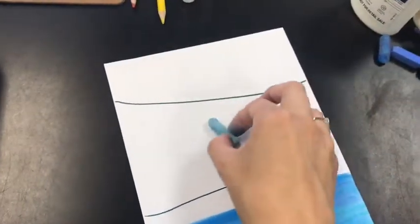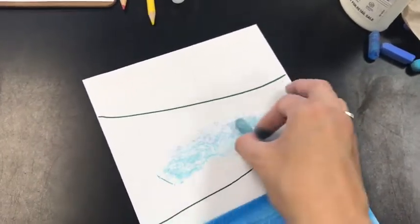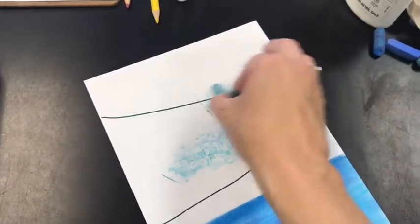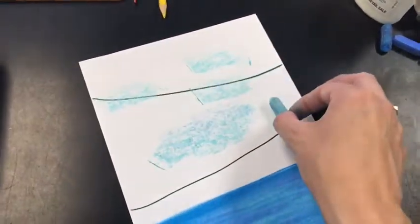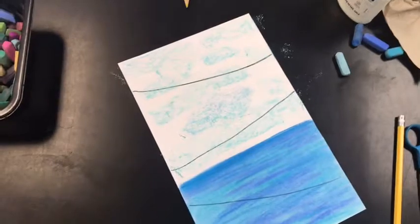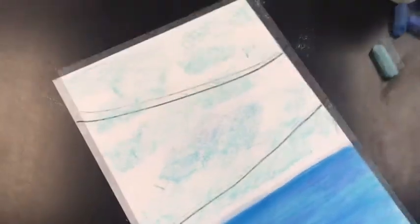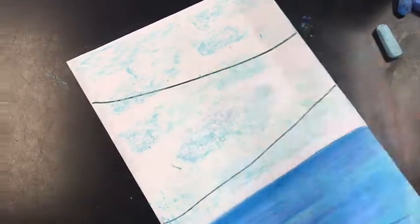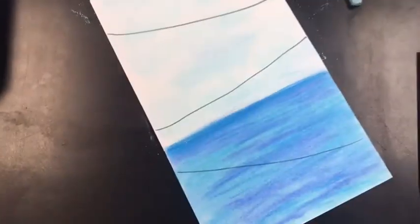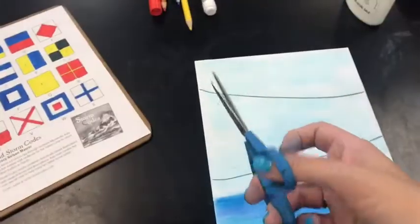You will only use your lightest blue pastel for the sky and you'll turn it on its side and you'll go back and forth across the paper in different pieces. You don't want to cover the whole thing. Then you'll use your finger to blend. This is gonna give the effect of clouds in the sky and the whole thing will look blended and really nice when you're all done.